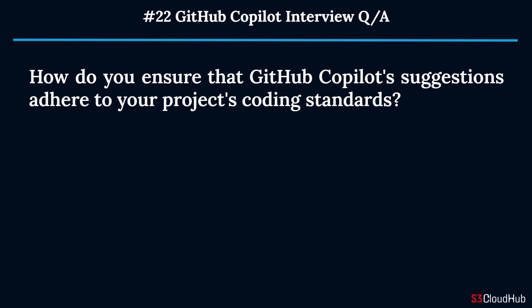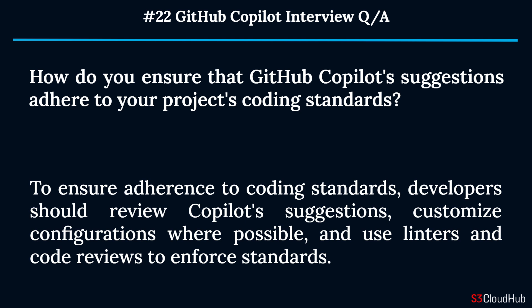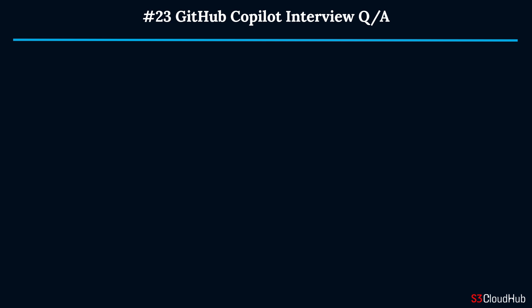Question twenty-two: How do you ensure that GitHub Copilot suggestions adhere to your project's coding standards? To ensure adherence to coding standards, developers should review Copilot suggestions, customize configurations where possible, and use linters and code reviews to enforce standards.